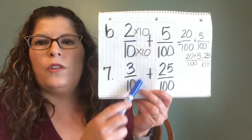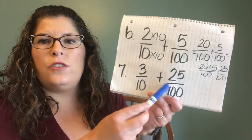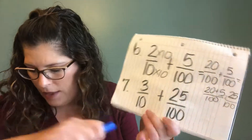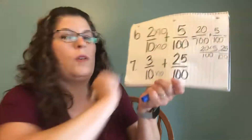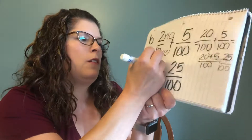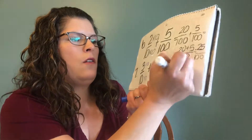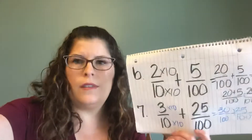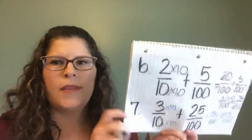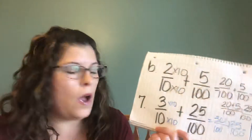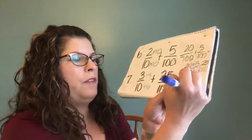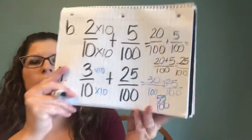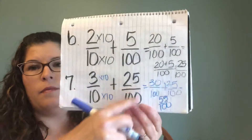Same thing here — I need to make them the same. So 3 tenths and 25 over 100. I need to make this 10 turn into 100, so I'm going to multiply again by 10. Whatever I do to the denominator, I need to do to the numerator. So that equals 30 over 100 plus 25 over 100. We're going to add across: 30 plus 25 equals 55 over 100. That denominator does not change, and we can't add them until they are the same. That's for page 33.